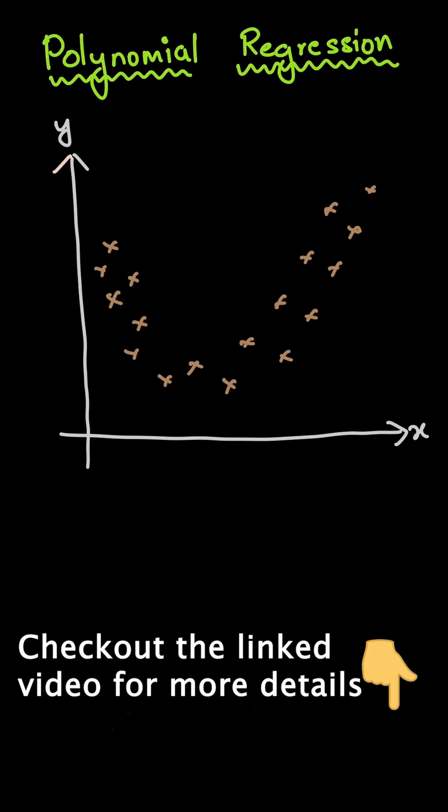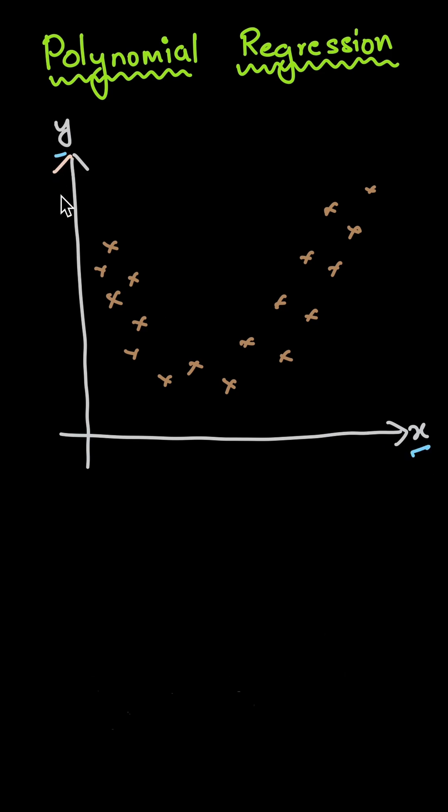Hello everyone. In this particular shot, let's try to understand the concept of polynomial regression. Let's say there is an input x and there is a corresponding output y. Between this x and y, let's say there is some real-time data and that data is looking somewhat like this.